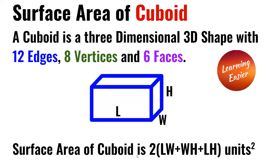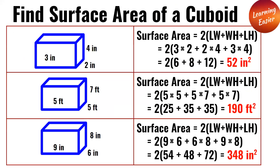The surface area of a cuboid is 2(LW + WH + LH).